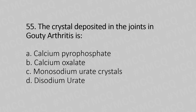Question 55: The crystal deposited in the joint in gouty arthritis is — Option A: calcium pyrophosphate, Option B: calcium oxalate, Option C: monosodium urate crystals, Option D: disodium urate. The answer is Option C, monosodium urate crystals.